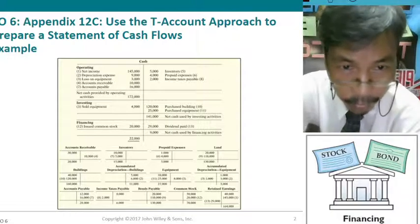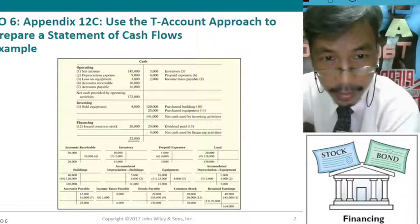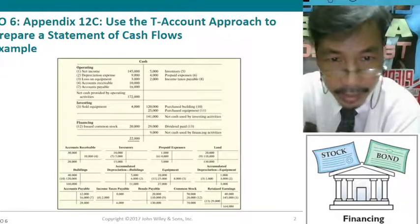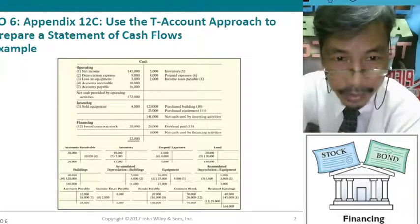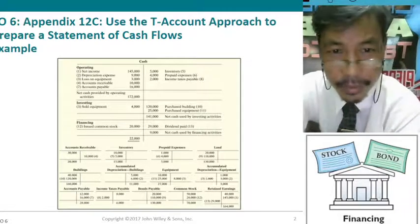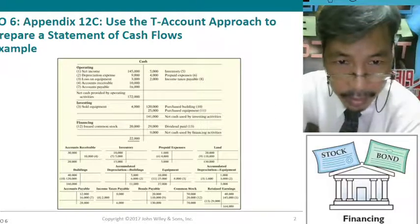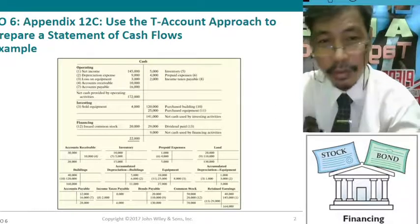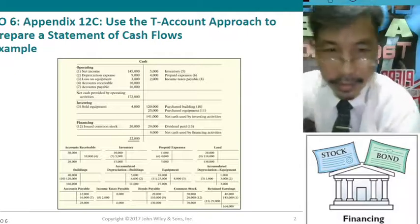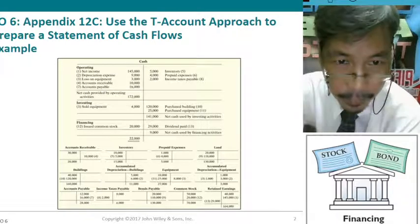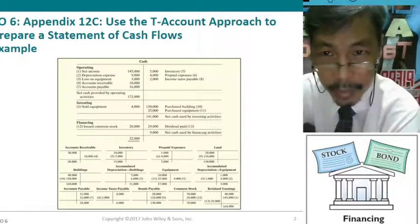We also have accounts receivable, inventory, prepaid expenses, land, buildings, depreciation, equipment, depreciation of that equipment, accounts payable, income tax payable, funds payable, and common stock. So these are the common types of accounts that we need.